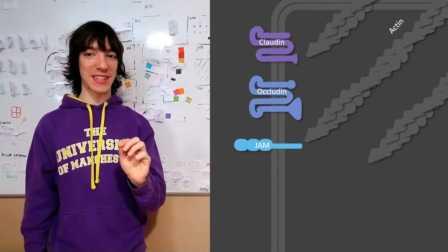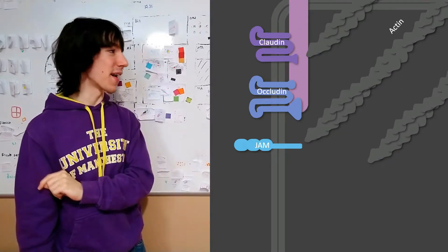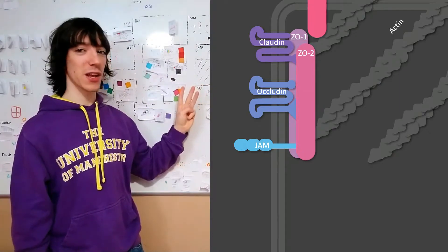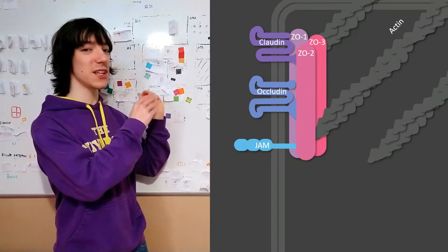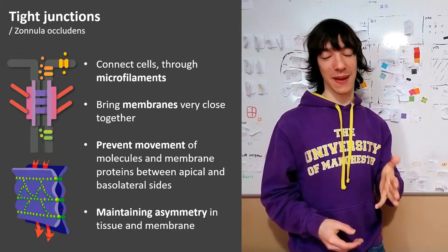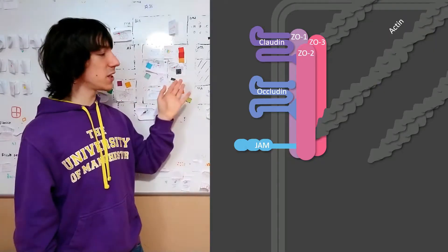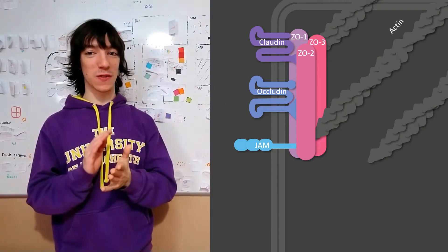In the case of tight junctions, these adapters are zonula occludens 1, zonula occludens 2, and zonula occludens 3, abbreviated as ZO. Zonula occludens, by the way, is the name of tight junctions in Latin.